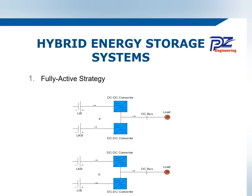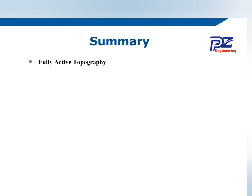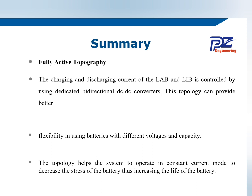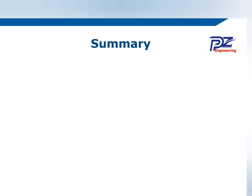As a summary, the full active topology has the advantage compared to others. The charging and discharging current of the lead-acid and lithium-ion batteries is controlled by using dedicated bidirectional DC-DC converters. This topology can provide better energy strength and flexibility in using batteries with different voltage and capacity. It also helps the system to operate in constant current mode to decrease battery stress, increasing the lifespan.